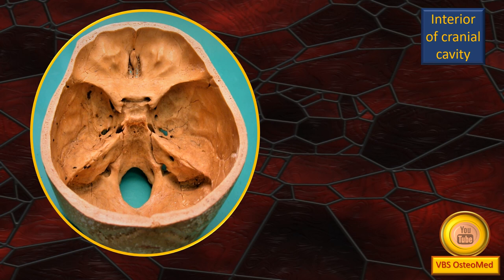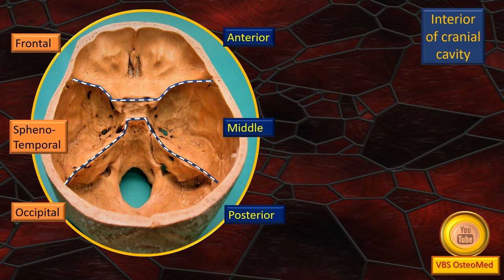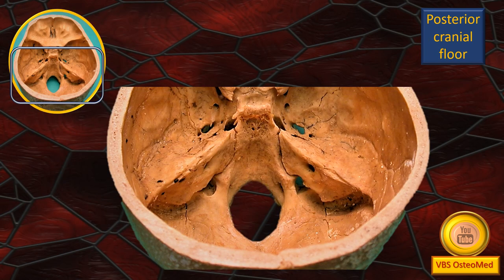Looking at this photograph, which we have seen in the previous two videos, the floor of the cranial cavity can be divided into three regions: an anterior frontal, a middle spheno-temporal, and a posterior occipital. Continuing that classification, we now concentrate on the area marked by the square — the posterior cranial fossa, which we can also call the posterior cranial floor.